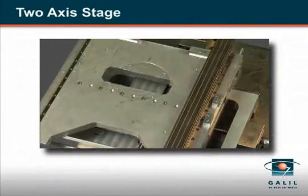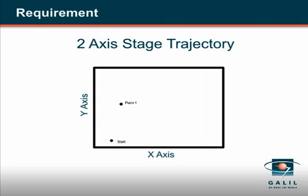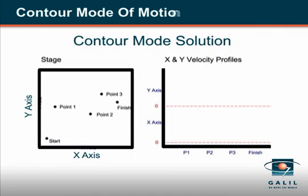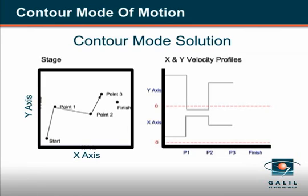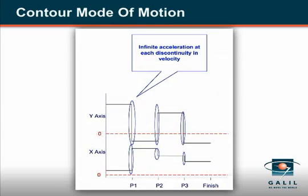Moving a two-axis stage through arbitrary points is a common motion control requirement. The problem is keeping the two axes coordinated and reaching each point in space at a predetermined time. A familiar way to accomplish this is with the contour mode of motion. The user specifies position points and the delta time to complete each segment, and the motion controller interpolates between points. The drawback to contour motion is the discontinuities in velocity, which can lead to an audible ticking and unsmooth motion.